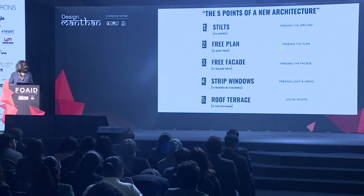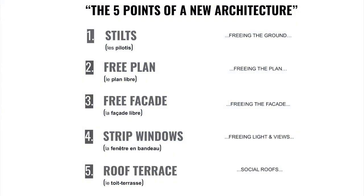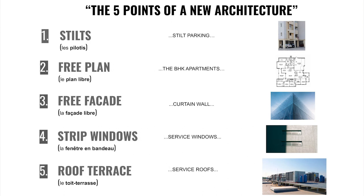These five ideas have taken a huge journey through space and time, traveling around the world for almost a century. In Corbusier's mind, they stood for five completely liberating ideas: freeing the ground, freeing the plan, freeing the facade, freeing light and views, and creating socially activated roofs. Here in India — and all over the world — there's been a dumbing down of the potential of these five ideas. It's always important for architects to keep thinking about why any thought in architecture began.